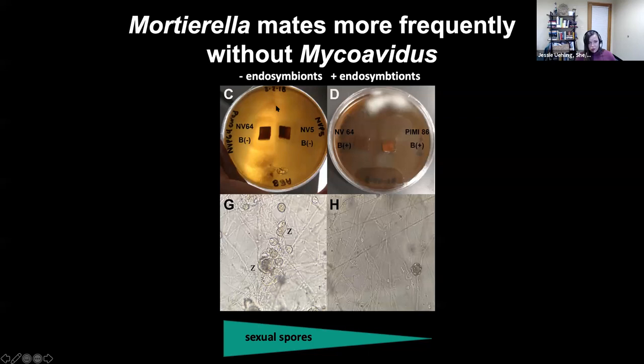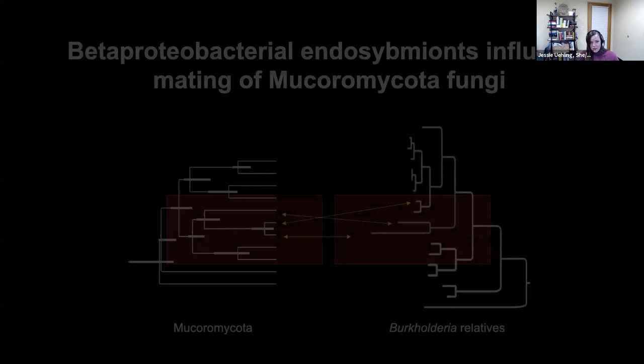One of the ways that's quite profound is that these endosymbionts seem to control the mating patterns of their hosts. If we take two isolates of the same species and plate them on media, we can monitor whether or not they have sex based on the production of zygospores — these golden spores with thick walls. There's an interesting pattern where cleared isolates (B-minus) mate way more than the wild-type isolates. In other words, these endosymbionts seem to have gained control of their host's ability to mate. This is not unlike your skin microbiome putting off volatiles that dictate who you want to mate with.